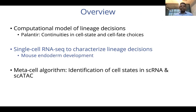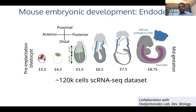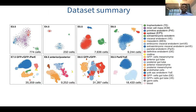In the next part, I want to briefly give an example of how we use these algorithms to study mouse endoderm development and characterize lineage decisions during mouse embryonic development. Our goal was to study embryonic development with a specific focus on the endoderm. In close collaboration with the Hatchantron Artis lab in the developmental biology program at SKI, we generated a large-scale single-cell RNA-seq dataset with a specific focus on the endoderm lineages.